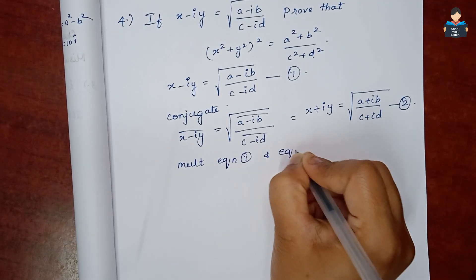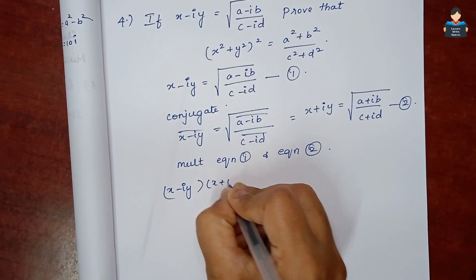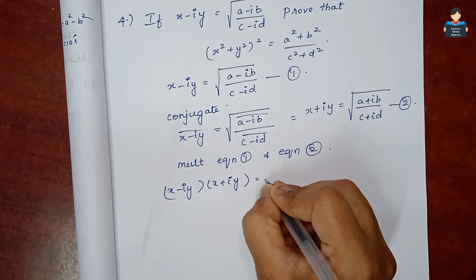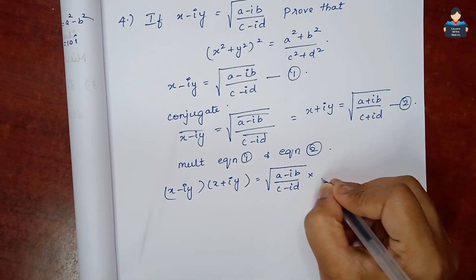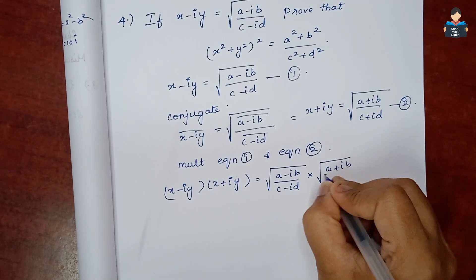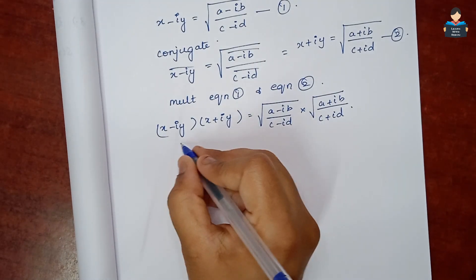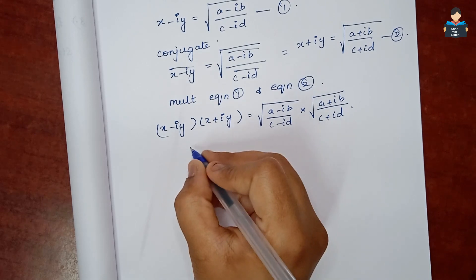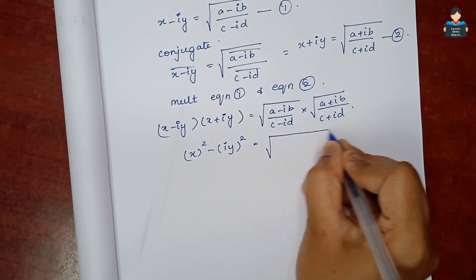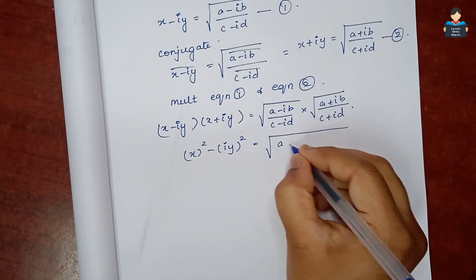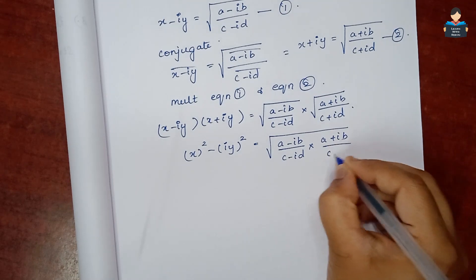Now multiply equation 1 and equation 2. So (x − iy)(x + iy) = √((a − ib)/(c − id)) × √((a + ib)/(c + id)). The right side becomes one square root of the product: √(((a − ib)(a + ib))/((c − id)(c + id))).